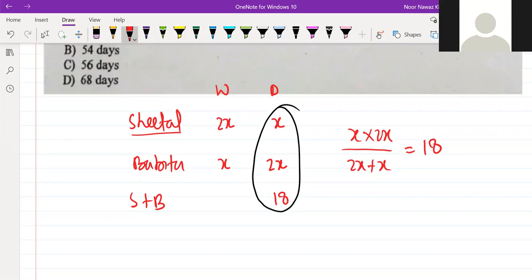If you write it like this, you will see that 1 upon x plus 1 upon 2x is equal to 1 upon 18. You can do this. Solve it and tell us what the answer is.